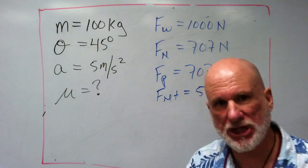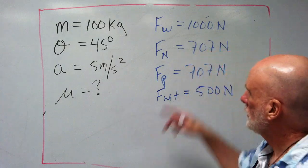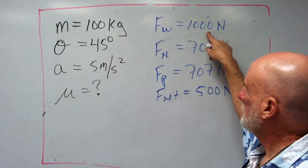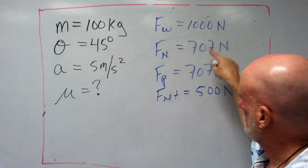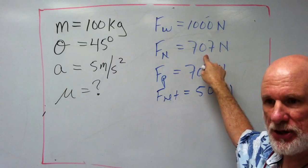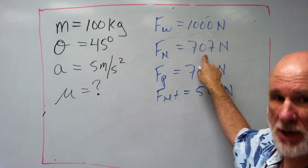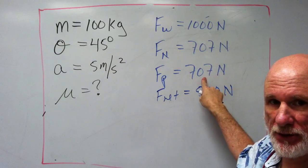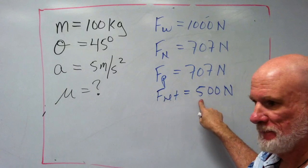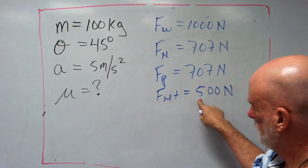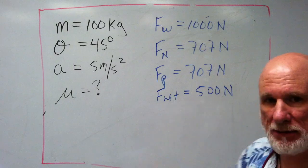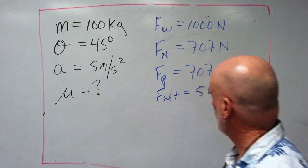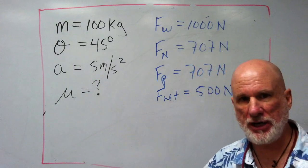All right, easy? Let's review what we just did. 10 times 100, Mg. Fw, Fw cosine 45. Fw sine 45. Fw sine 5. M, A. M is 100. A is 5. So far, so good?